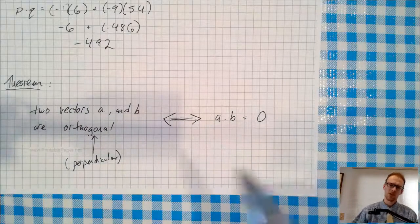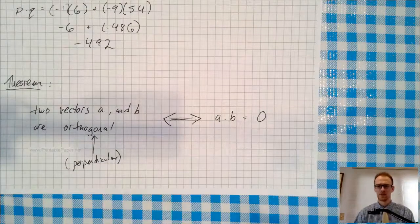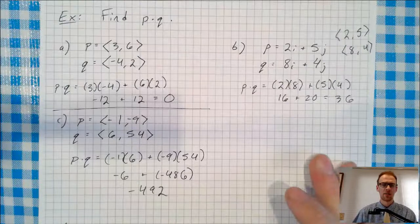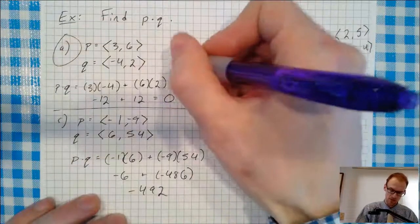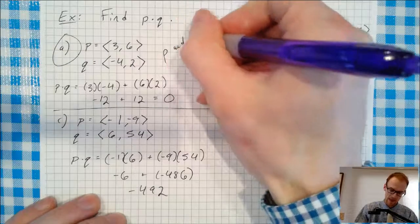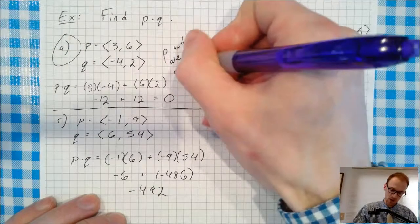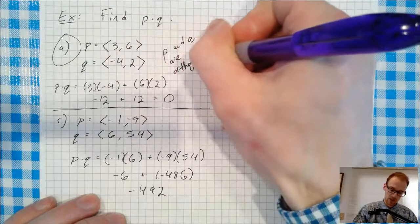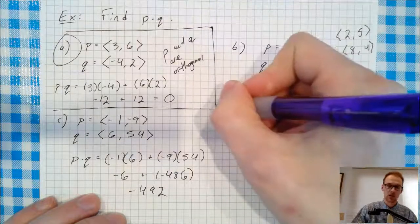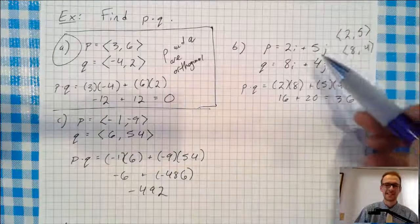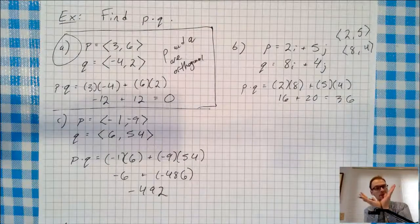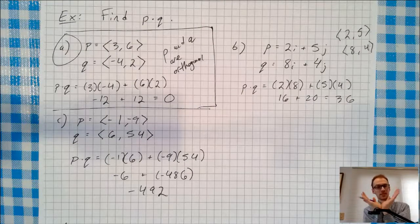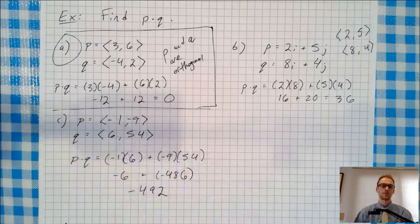And if the dot product does not equal 0, they're not orthogonal and vice versa. Okay, so which one of these pairs of vectors is orthogonal? This one right here. These P and Q are orthogonal in this case. But not in this case. These P and Q here are not perpendicular. They're at a different angle other than 90 degrees. Same thing for part C.